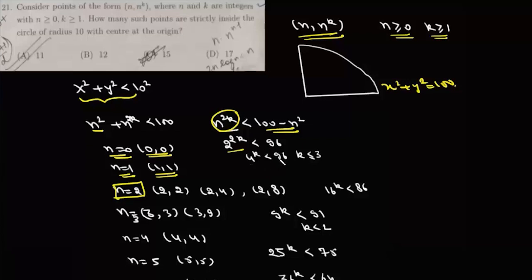Now we know that 4^3 is 64, so the value of k should be less than 3. So here we have three points: (2, 2), (2, 4), and (2, 8).